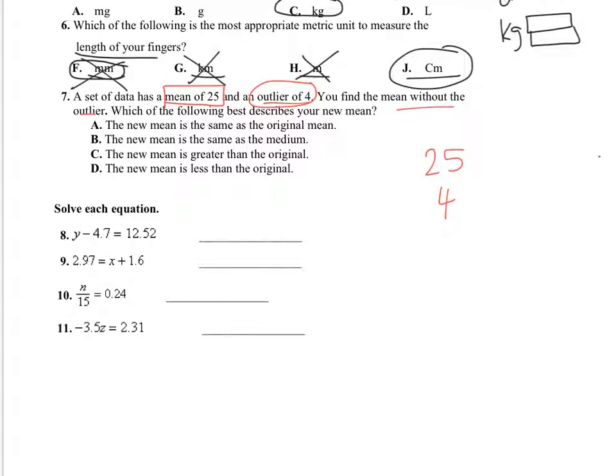So 4 is going to make your mean go down. So if you don't include 4, if you take out the 4, 4 is a lower number, so you're going to expect your mean to go up, because you're no longer including it. So the answer is C, the new mean is greater than the original.